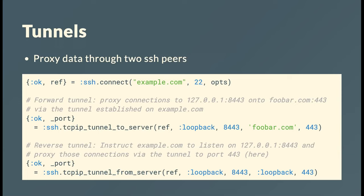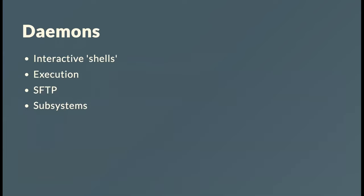Reverse tunnels mess with your mind. In a reverse tunnel you're telling example.com to listen on port 8443, and if someone connects there, forward it back to you across the SSH tunnel, then forward it on to your local interface on port 443. They're pretty awesome — in test environments you don't always have all the connectivity you want, and tunnels are a great way to bypass connectivity issues. The fact that they're actually secure is often just a bonus.